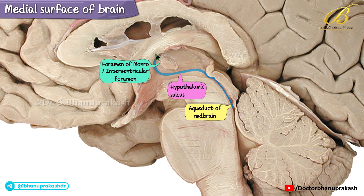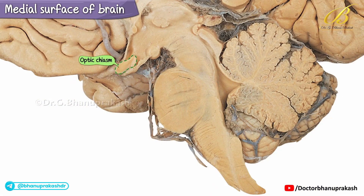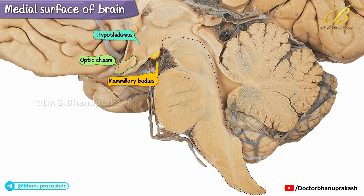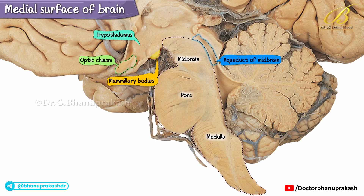Our view captures the optic chiasm at the interior aspect of the hypothalamus, with the mammillary body positioned just posteriorly. We can also differentiate the tripartite structure of the brainstem: the midbrain, the pons with its interior bulge, and the medulla. The midbrain hosts a narrow cerebrospinal fluid channel, the aqueduct of the midbrain.